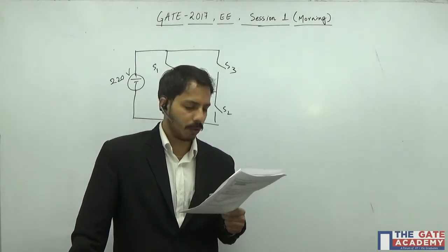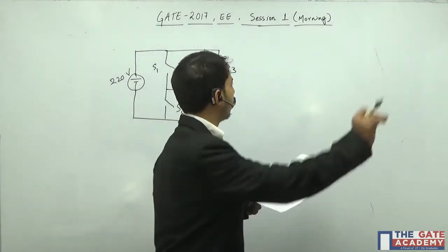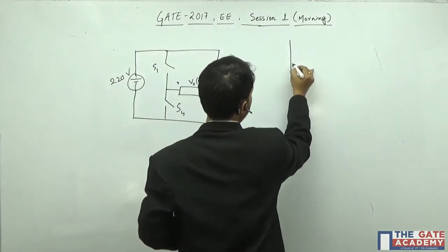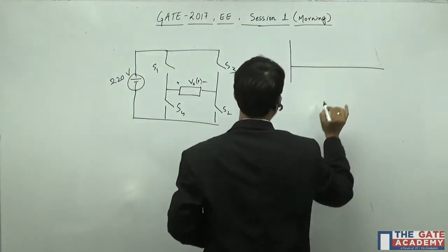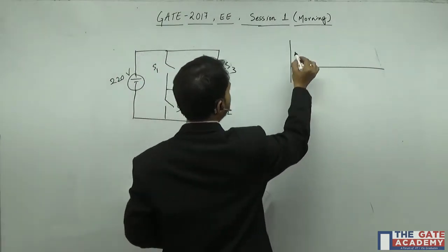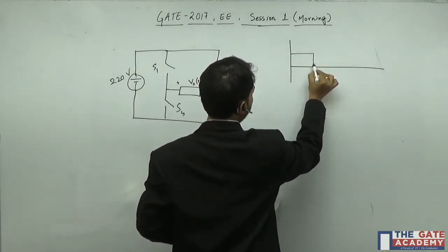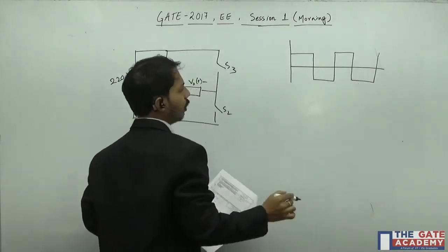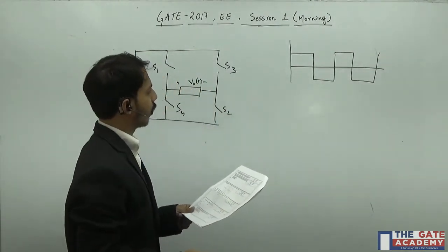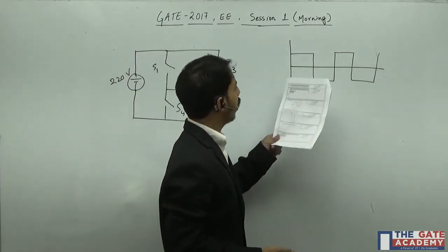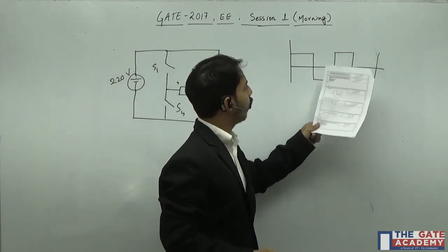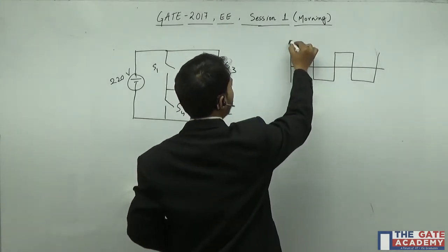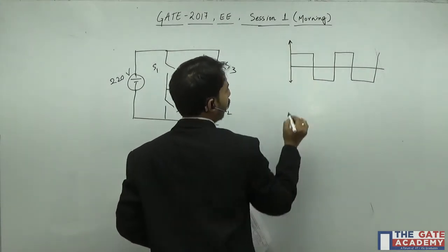Let us see what is the waveform. If we see the waveform of the output, we can say that the shape will be a square wave and the frequency is given. Now for finding the RMS value of a square wave, we don't have to bother about what is the frequency.